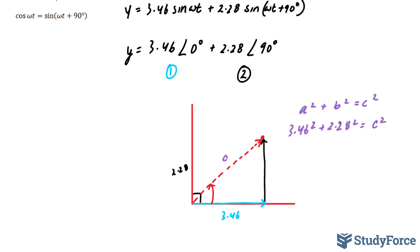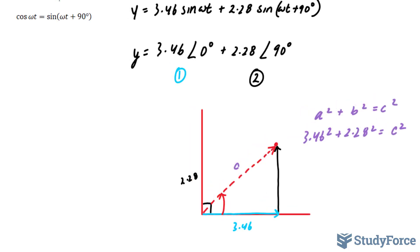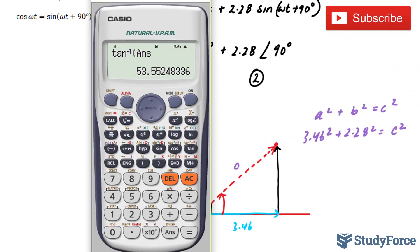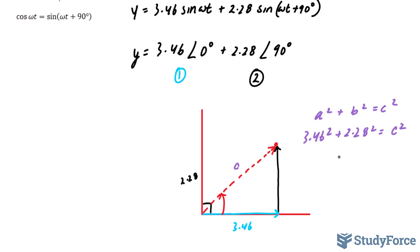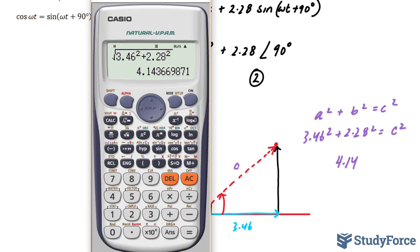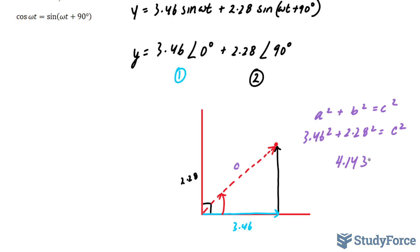We'll have to add these two terms up and square root. Let's go ahead and do that. The square root of 3.46 squared plus 2.28 squared, we end up with 4.14. And given that these are three significant figures each, and the first number to be removed is a 3, we'll leave it at 4.14.